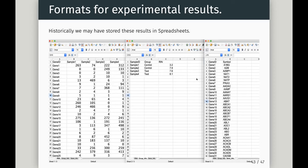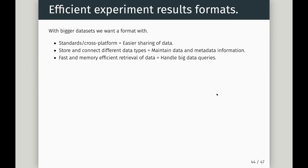Typically this is handled like multiple Excel tabs — scores, sample info, gene info. But with bigger data sets we need better formats. We want standards like we saw with SAM and BigWig, cross-platform compatibility across Mac, Linux, and Windows, and the ability to work in Python, R, C, or Java. The format needs to maintain relationships between data and metadata, and be fast and memory-efficient for large data sets.